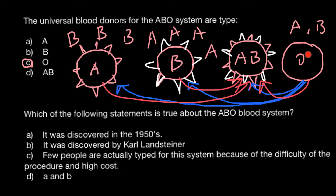If we transfuse blood group O to someone who belongs to blood group A, who has antigens A on the surface of their red blood cells, then antibodies A from blood group O would kill those cells, because they have antigens A. The same is true for blood group B, which has antigens B on the surface — antibodies from blood group O would kill those cells too. And of course, the serum of blood group O would fight all red blood cells of blood group AB.